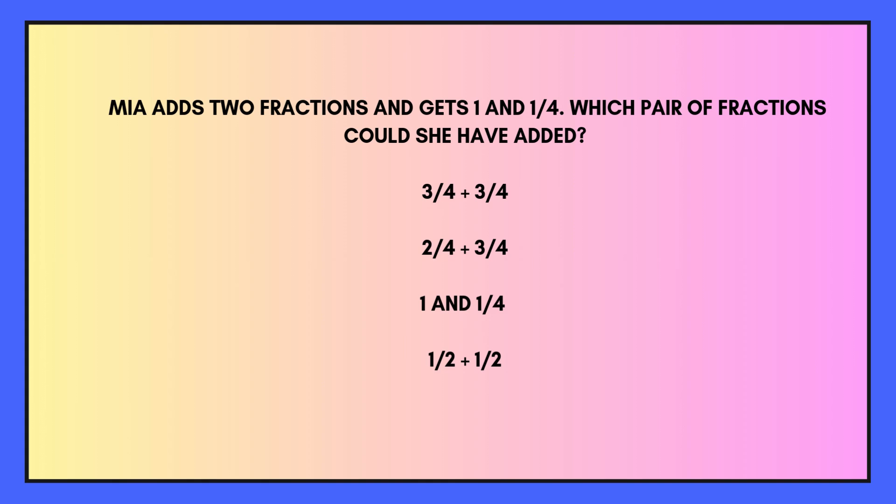Here's a question for you. Mia adds 2 fractions and gets 1 and a quarter. Which pair of fractions could she have added? If you need a moment to think, please pause the video. Our options are 3 quarters plus 3 quarters, or 2 quarters plus 3 quarters, or 1 whole and 1 quarter, or our final option is 1 half and 1 half.